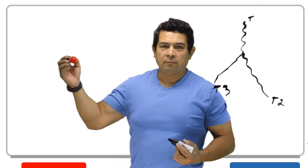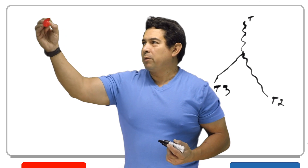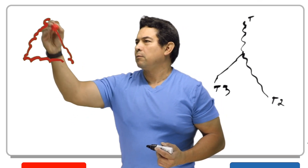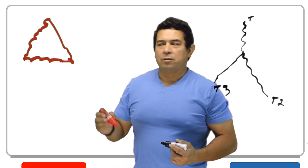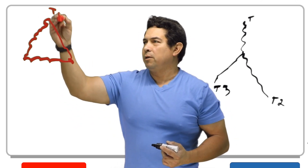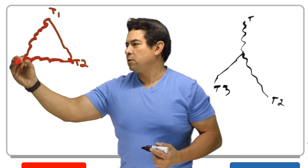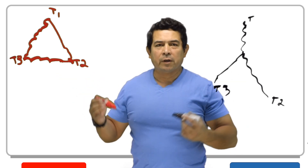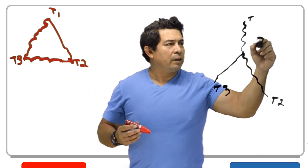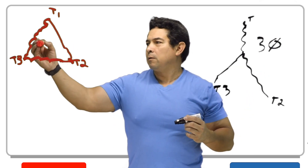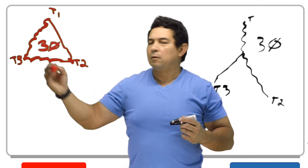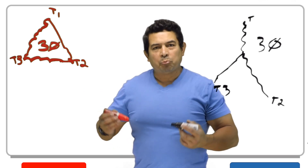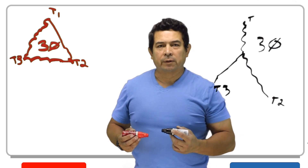Sometimes, depending on what you do, you may also find them in a delta configuration, so you would have T1, T2, T3 like this. Whether you have a Y or delta configuration on a three-phase system, they're going to be basically the same thing. But I wanted to talk about single-phase motors first.